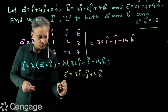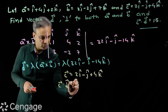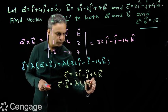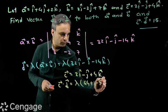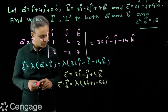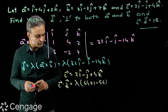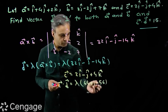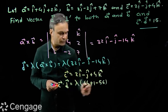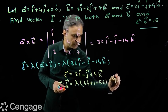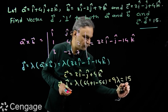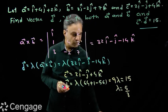So c dot d will be lambda into, inside brackets, we will have 64 plus 1 minus 56. What is this value? 65 minus 56, this will be 9. So we have here 9 lambda. 9 lambda is 15, so lambda will be 5 over 3.